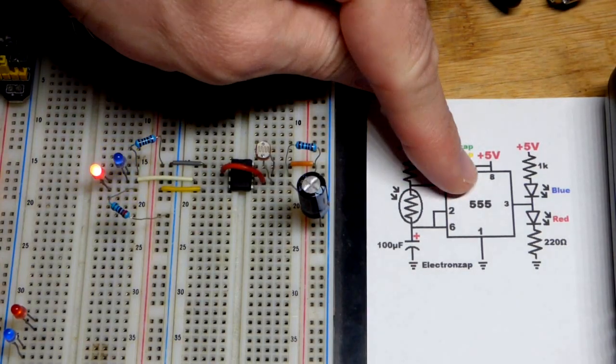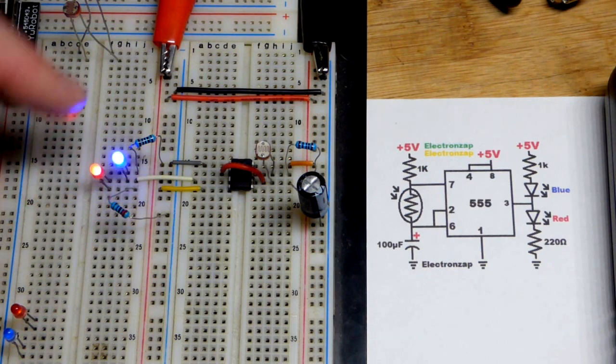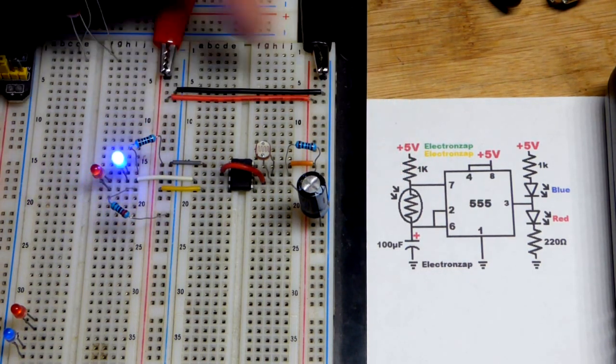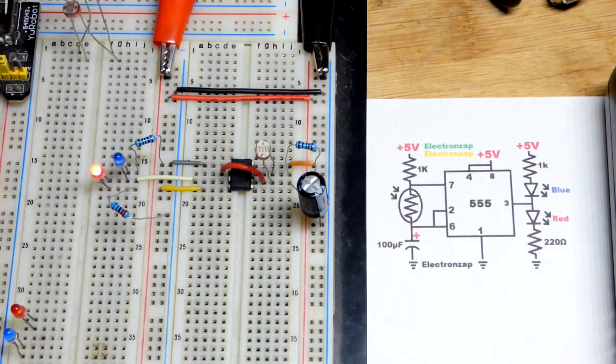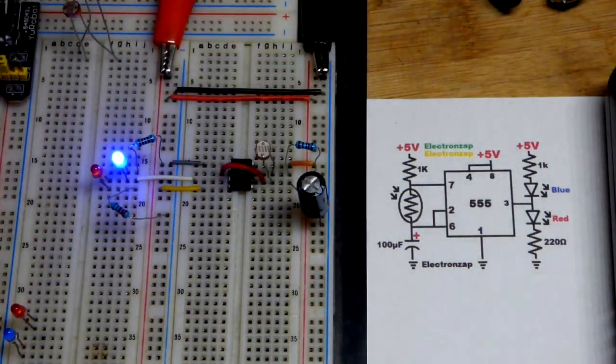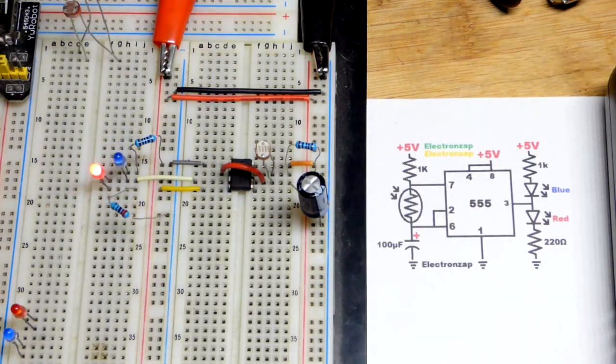So now in this video, we're going to take another look at the 555 timer LED flasher circuit. It is being controlled by a light-dependent resistor. I'm going to turn the light up - you can see that it flashes faster. Turn the light down, and it goes slower. We can get it to where it's probably going to take almost forever to flash.